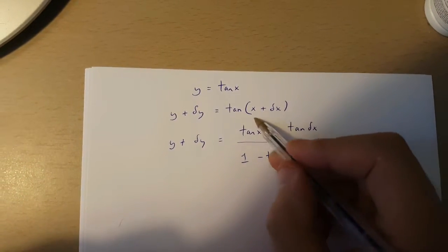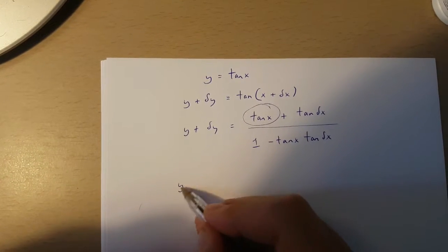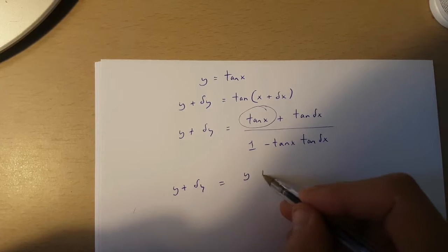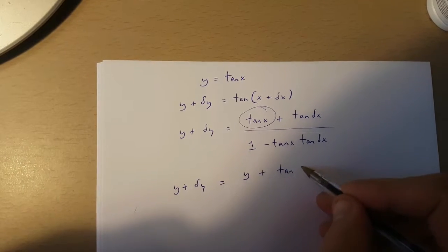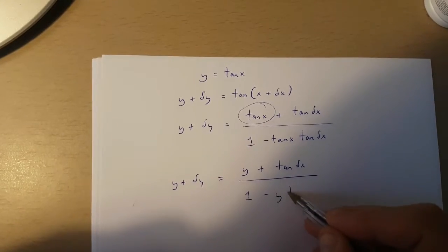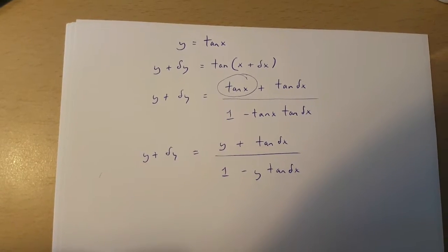Now you've got to remember that y is actually equal to tan x. So we've got y plus change in y is equal to y plus tan change in x over 1 minus y times tan change in x.